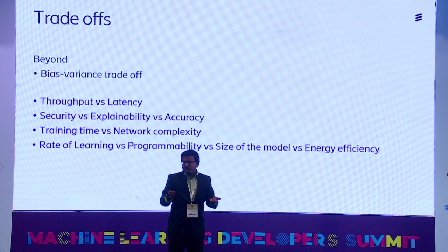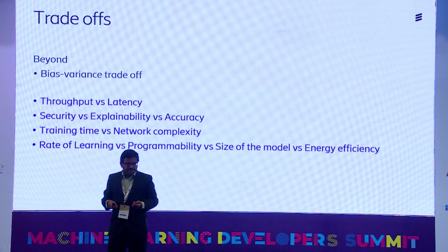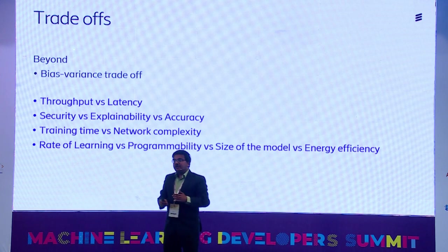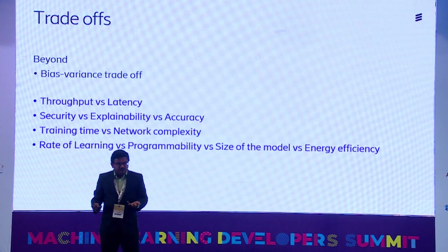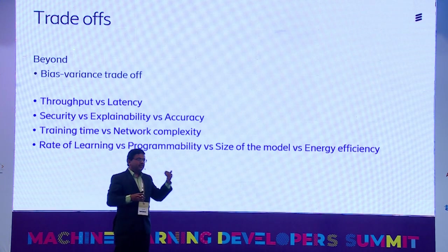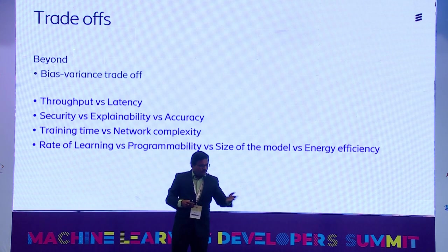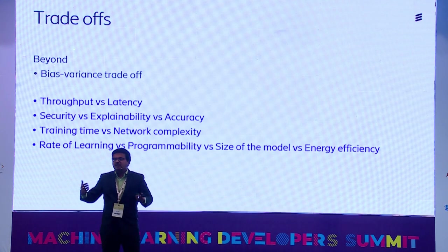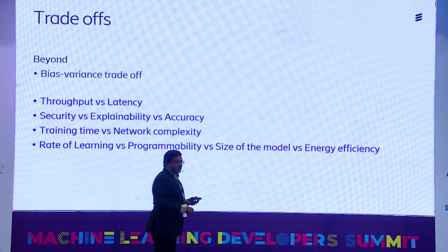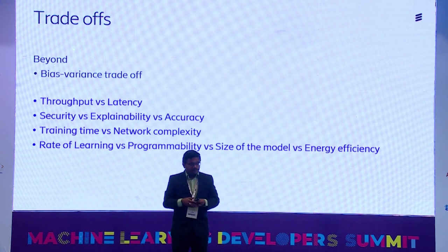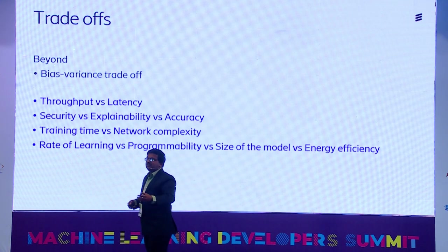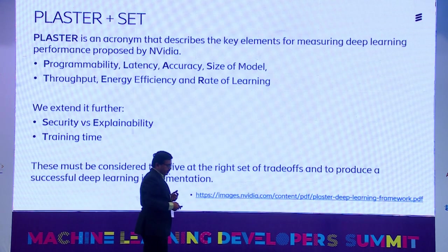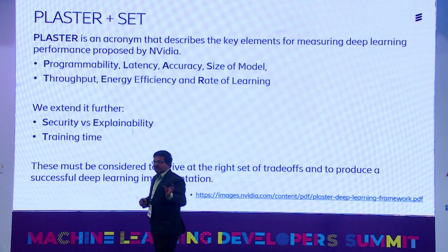The rate of learning — how frequently you need to retrain — is linked to programmability: how automatically does the modeling happen, or do engineers need to be involved? Size of the model is linked to energy efficiency and total cost of ownership. To remember all these trade-offs, I use the PLASTER+SET acronym. PLASTER from NVIDIA stands for: Programmability, Latency, Accuracy, Size, Throughput, Energy efficiency, and Rate of learning. I added SET: Security, Explainability, and Training time.